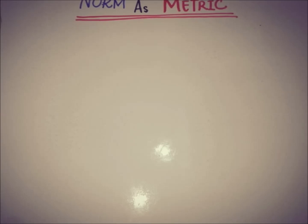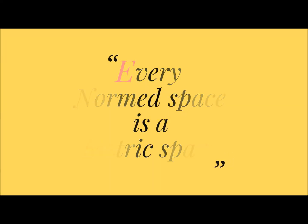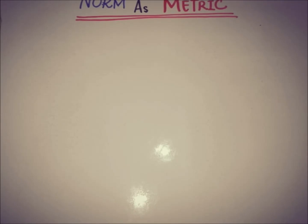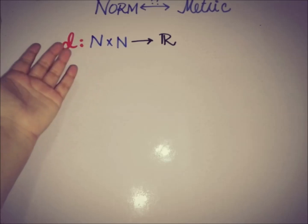Metric space gives us the feel of distance among its elements. The relation between normed space and metric space is that every normed linear space is a metric space, and we are going to see the proof of this claim.